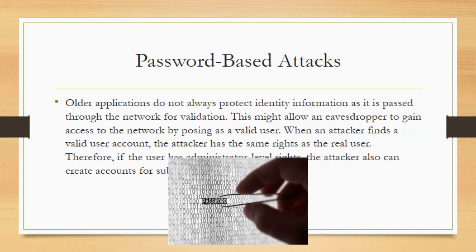Password-based attacks. Older applications do not always protect identity information as it passes through the network for validation. This might allow an eavesdropper to gain access to the network by posing as a valid user. When an attacker finds a valid user account, the attacker has the same rights as a real user — basically hacking into emails, Facebook, any social media, or an organization's accounts using stolen credentials.